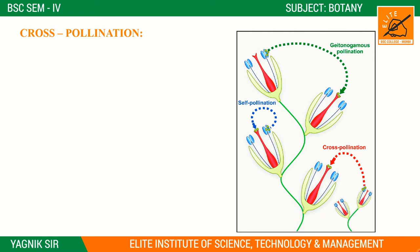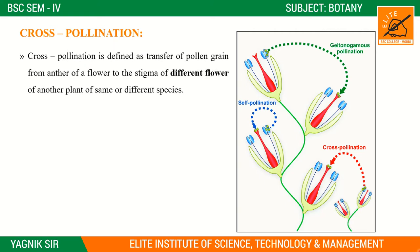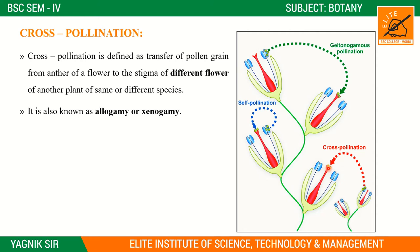Now we are moving on to cross pollination. Cross pollination is defined as the transfer of pollen grains from the anther of one flower to the stigma of a different flower.